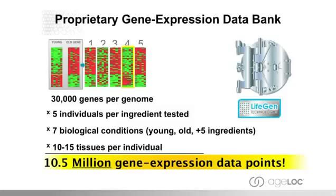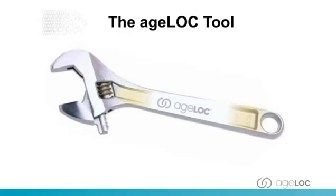There are 30,000 genes per genome. In this simple experiment, five individuals were tested with various ingredients across seven biological conditions — young and old plus five ingredients — adding up to about ten and a half million gene expression data points. You can see that this quickly starts to accumulate. This is information that helps us access an understanding of aging at the genetic level.